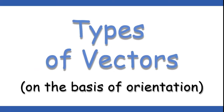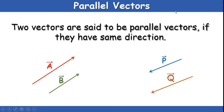Types of vectors: on the basis of orientation, vectors can be divided into different types. The first is parallel vectors. Two vectors are said to be parallel vectors if they have the same direction. For example, vector A and vector B are both parallel to one another because they are moving parallel in the same direction. For vectors P and Q both moving downward in the same direction, we call them parallel vectors.